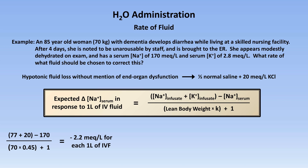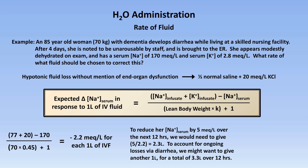Since her hypernatremia has probably been going on for more than 48 hours based on the history, our goal would be to reduce the serum sodium by 5 mEq per liter over the next 12 hours. To do this, we would need to give her a volume equal to 5 divided by 2.2, giving us 2.3 liters. We must also account for ongoing losses via her diarrhea, which we could roughly estimate at 1 liter during that time span. Adding this, we end up with a total of 3.3 liters over 12 hours — 3,300 mL divided by 12 hours is 275 mL per hour.